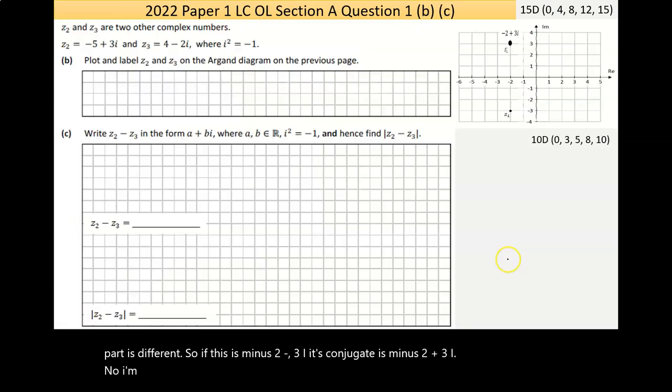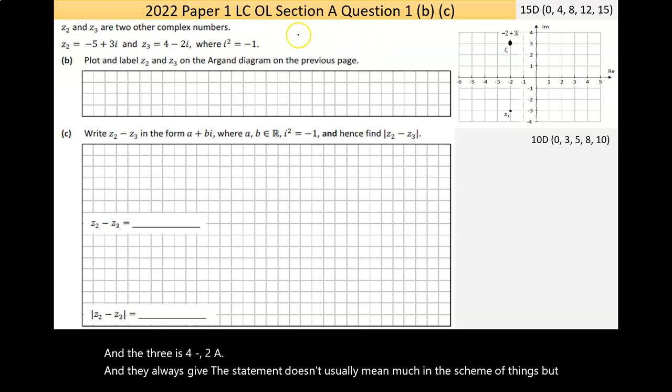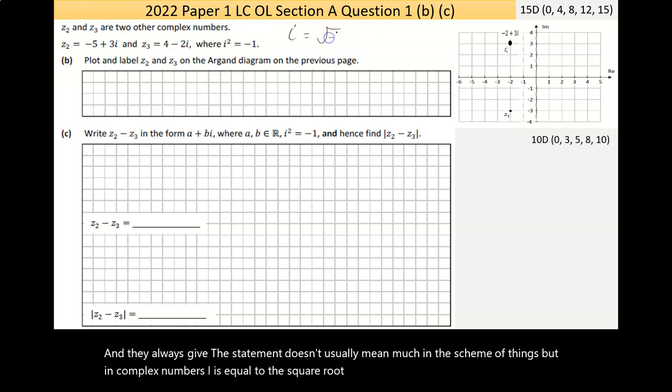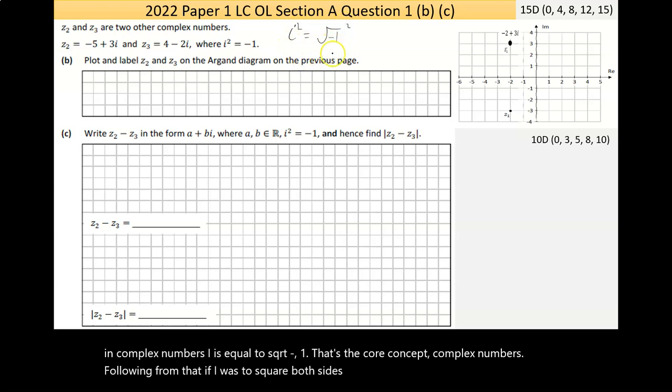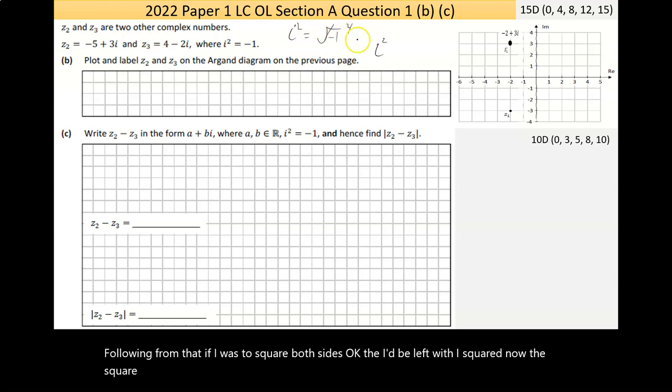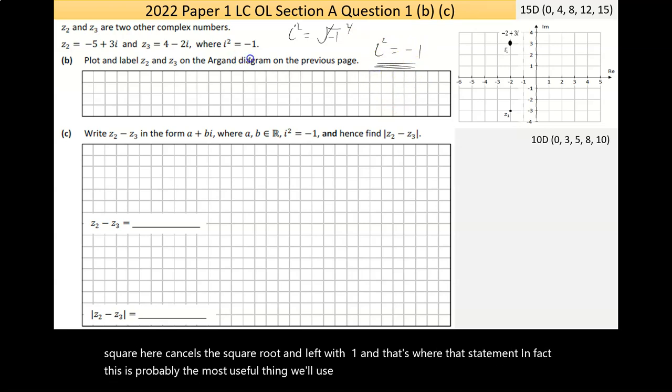On the next slide we have part B. So parts A and B are marked together, and part C then is given 10 marks. It says Z2 and Z3 are two other complex numbers. It's telling us that Z2 is minus 5 plus 3i, and Z3 is 4 minus 2i. Now they always give the statement, it doesn't usually mean much in the scheme of things, but in complex numbers i is equal to the square root of negative 1. That's the core concept of complex numbers.